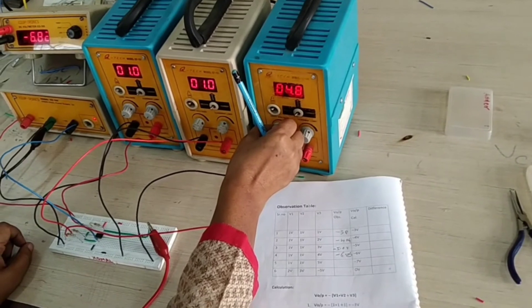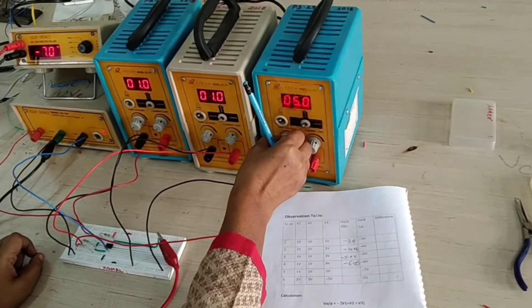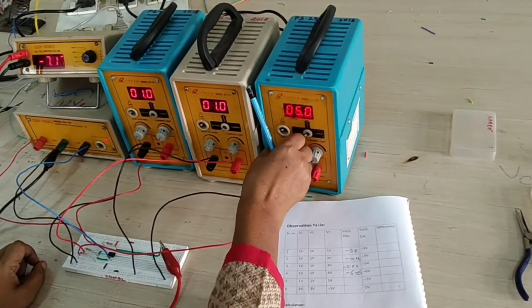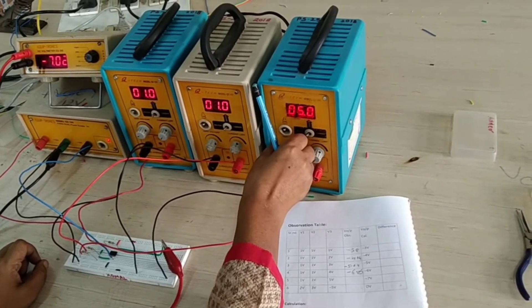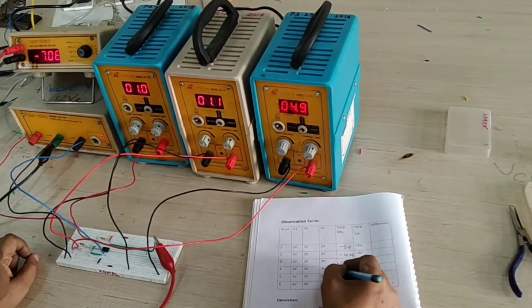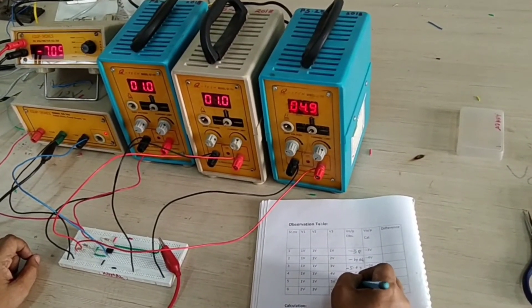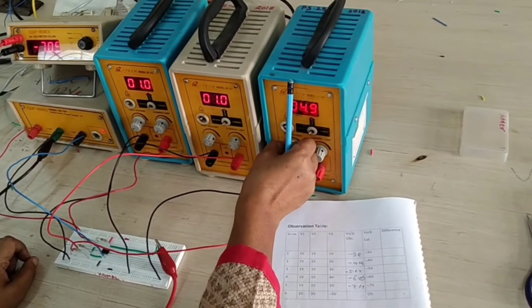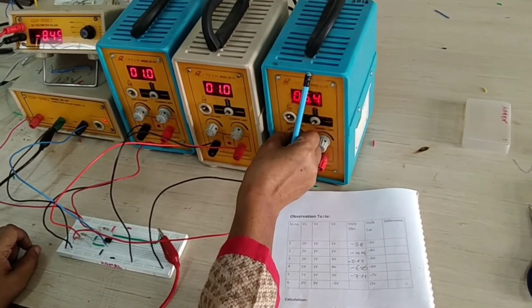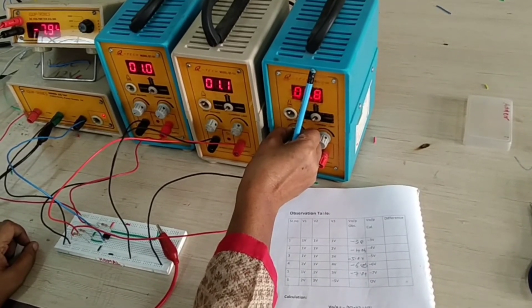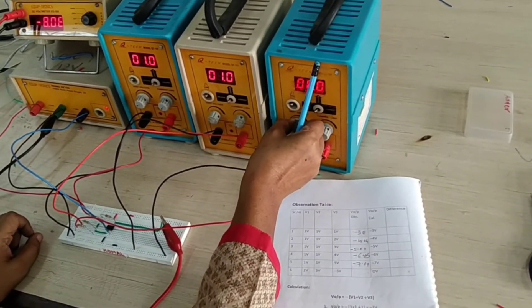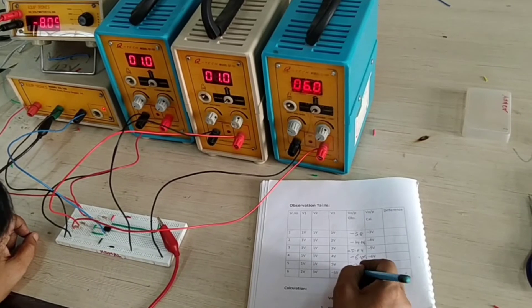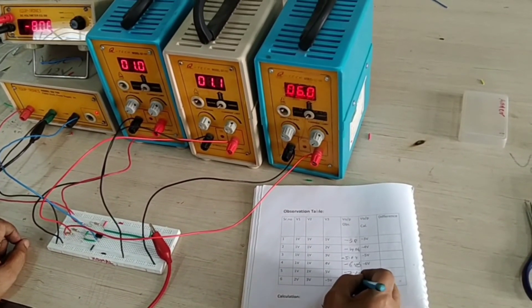Next is here, we are adjusting 5 volt, 5 volt, 7.09, minus 7.09, and we are adjusting 6 volt, minus 8.08.